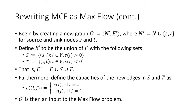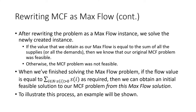The capacities of the new edges from S and to T are set to either the supply value or the negation of the demand (taking the absolute value since demands are negative). With this new graph G', we solve a max flow instance. If the max flow value equals the sum of all supplies (or equivalently all demands), then the original MCF problem is feasible. Otherwise it is not. If feasible, we can use this max flow solution as an initial feasible solution for our MCF algorithm.